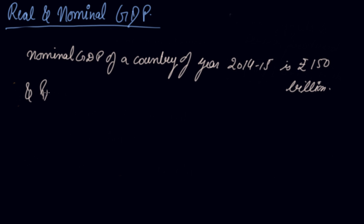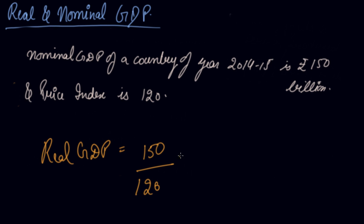So your real GDP in that case will be 150 divided by 120 into 100, that is nominal GDP divided by price index into 100. This will give you rupees 125 billion.